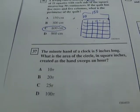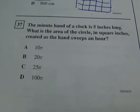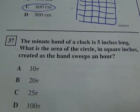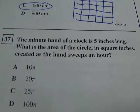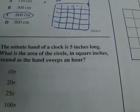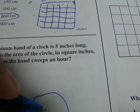Basically, I think the word quilt is the most confusing part of that problem. And last one, we've got the minute hand of a clock is five inches long. So what is the area of the circle in square inches created as the hand sweeps an hour? So that's what you just kind of got to visualize.